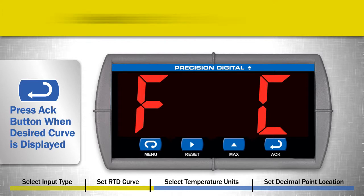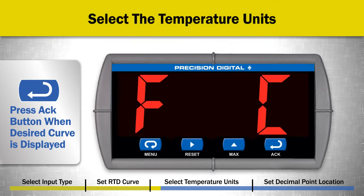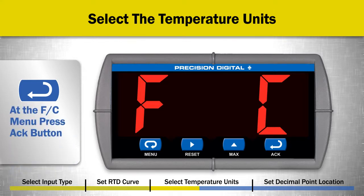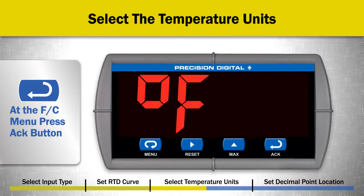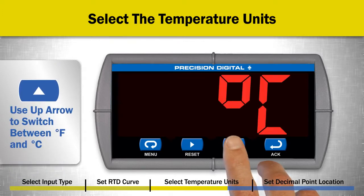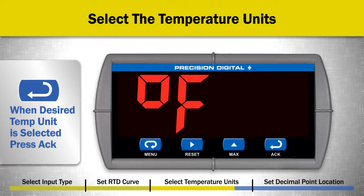The F or C menu appears next. This menu selects the temperature units on the display as either Fahrenheit or Celsius. At the FC menu, press the ACK button. Use the up arrow button to switch between degrees Fahrenheit and degrees Celsius. When the desired temperature display unit is selected, press the ACK button.